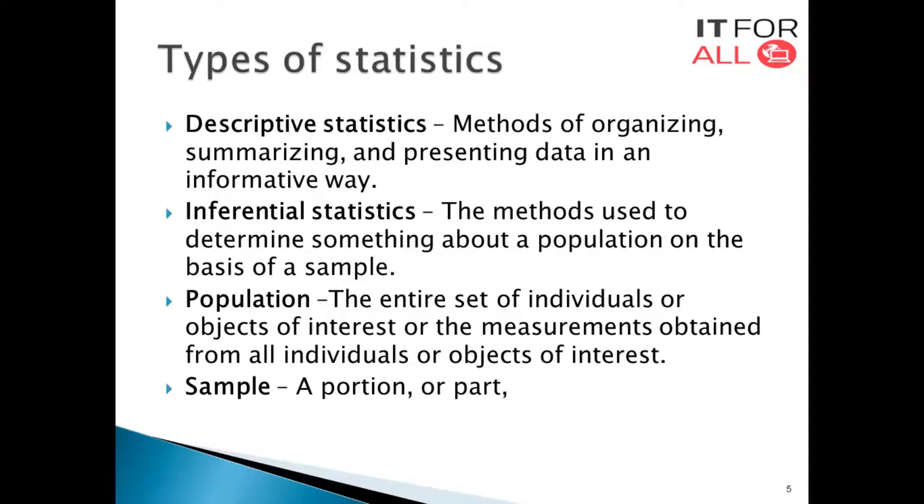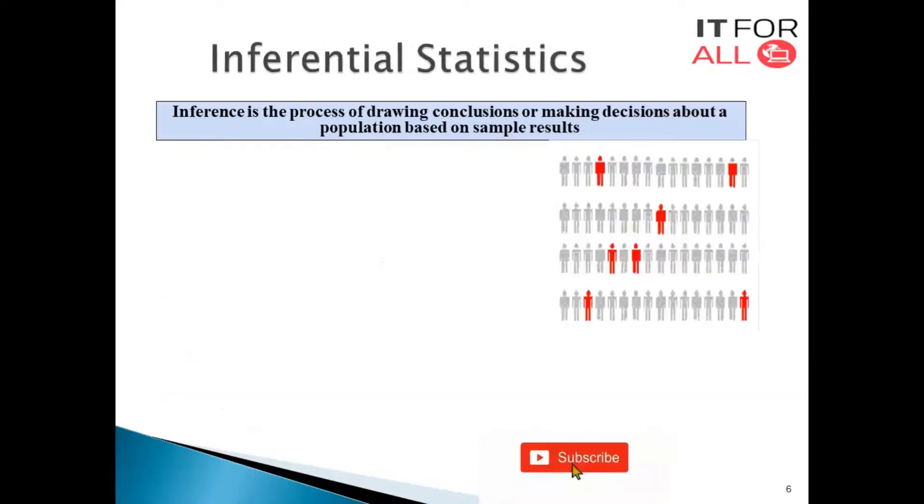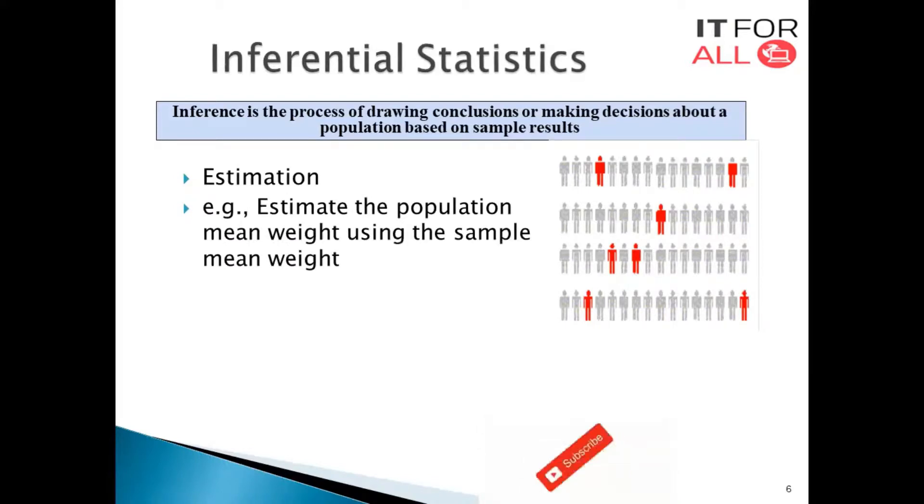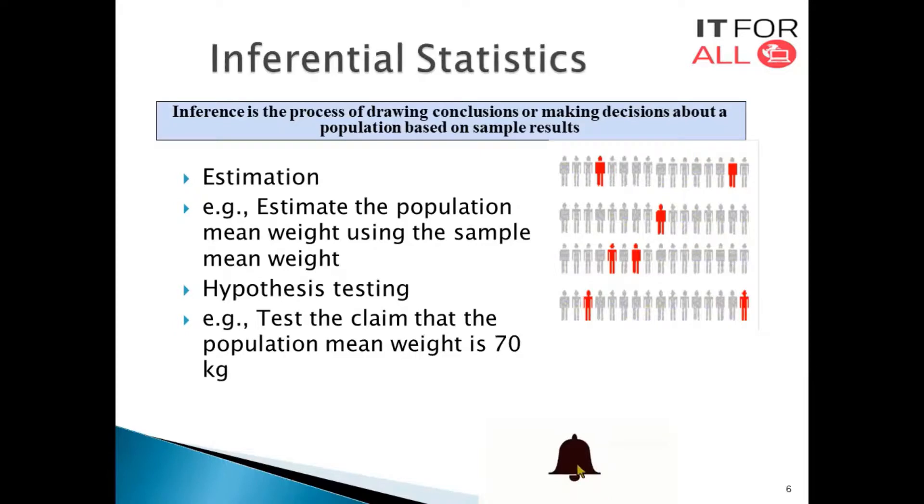If we go into detail, inferential statistics is the process of drawing conclusions or making decisions about a population based on sample results. We can see here in the diagrams, the red samples are taken from this population to represent the whole population. The main topics covered in inferential statistics are estimation, like estimate the population mean weight using the sample mean weight, and the second one is hypothesis testing. Hypothesis testing, like testing the claim that the population mean weight is a specific value or not, whether it's above the condition, below the condition, equal to the condition, whatever. These tests like t-test, z-test, etc.